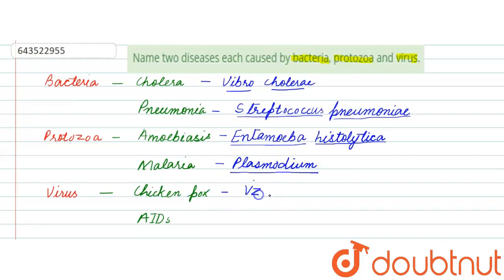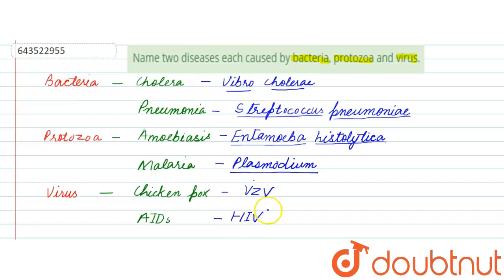Among viral diseases, chickenpox is caused by VZV — that is, Varicella Zoster Virus. AIDS is caused by HIV — that is, Human Immunodeficiency Virus. So this is all for this question; hope you have understood well. Thank you so much.